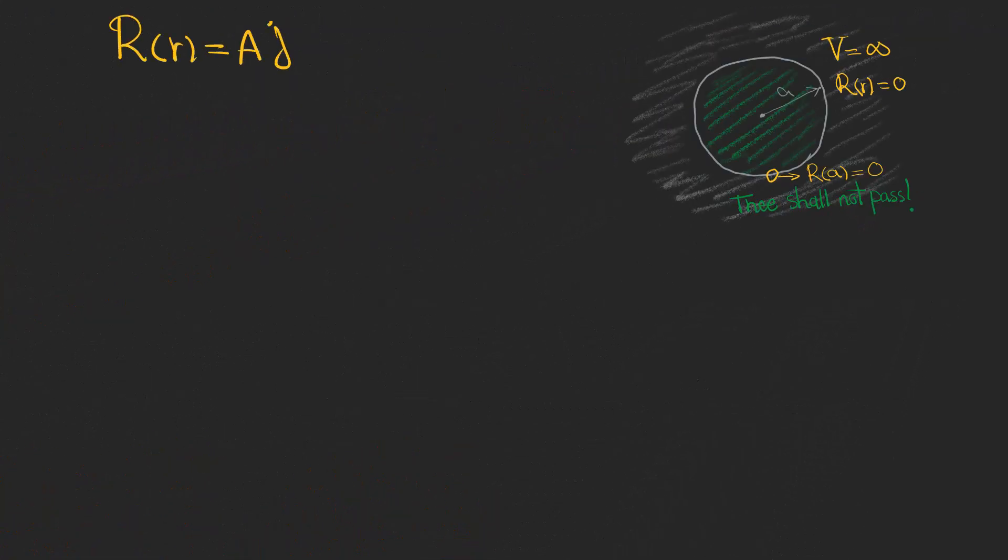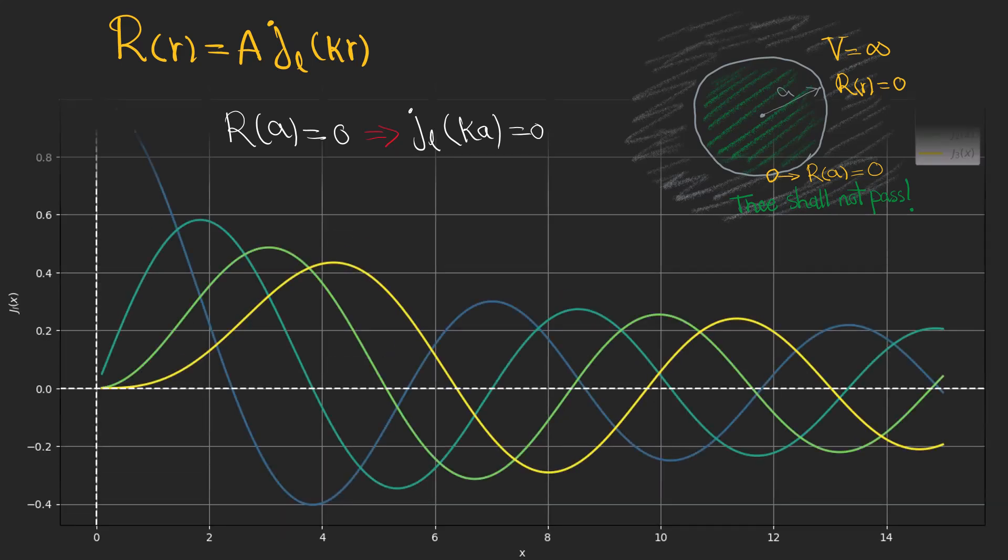So from now on, we should just care about the Bessel functions of first kind. Based on the boundary conditions of the infinite spherical well, J has to be zero. But there is a problem. We cannot find a good expression for zeros of the Bessel functions. So we use numerical methods, and as you can see, J0, J1, J2, and J3 are illustrated here.